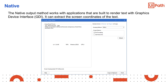The Native output method can be used only with applications that are built to render text with graphics device interface. It is useful when the coordinates of each word are needed, and when the font and color of the text are required to be retained accurately. However, it only extracts visible text, cannot work in the background, and cannot support Citrix. This method offers the following options: No Formatting and GetWordsInfo. When font and color are not necessary to capture, the No Formatting box can be checked, and the wizard extracts only the text, just like the FullText method.